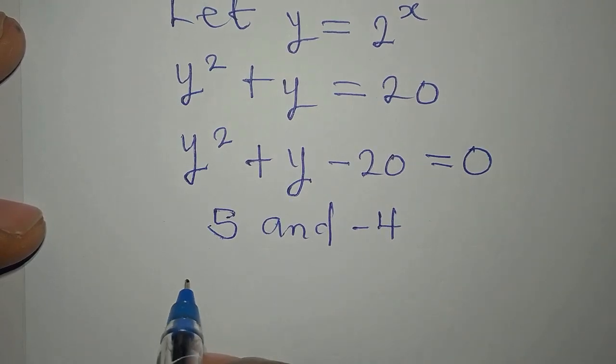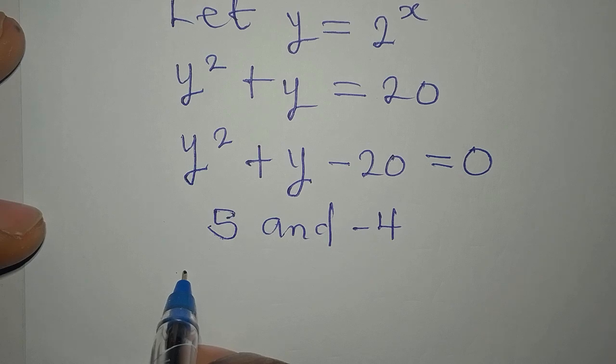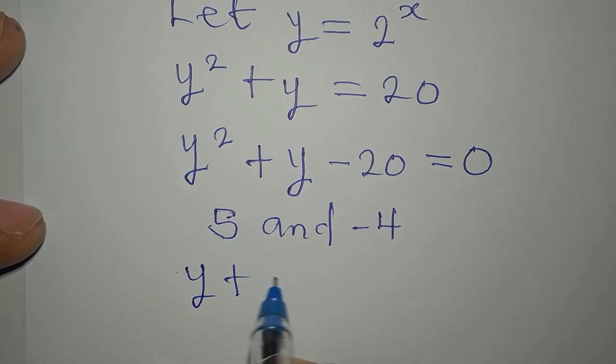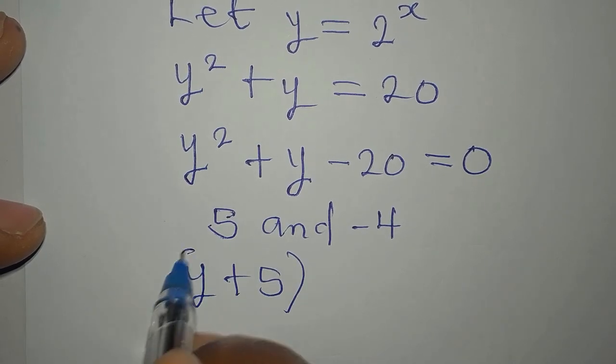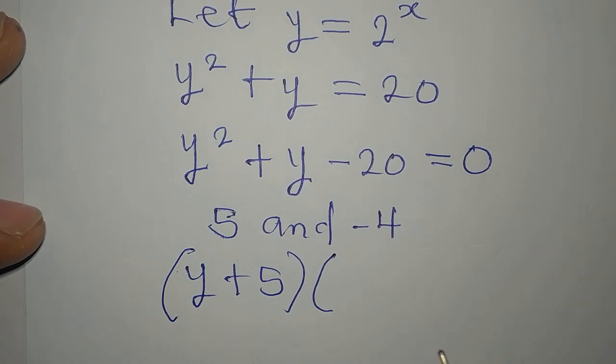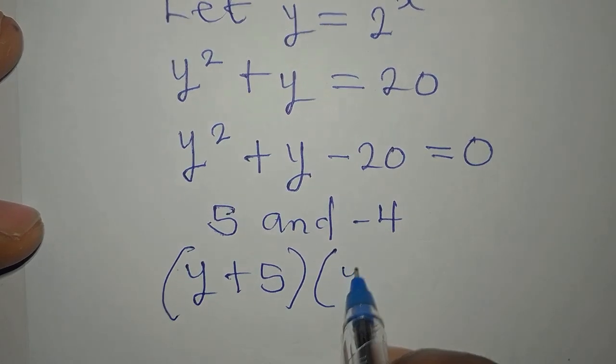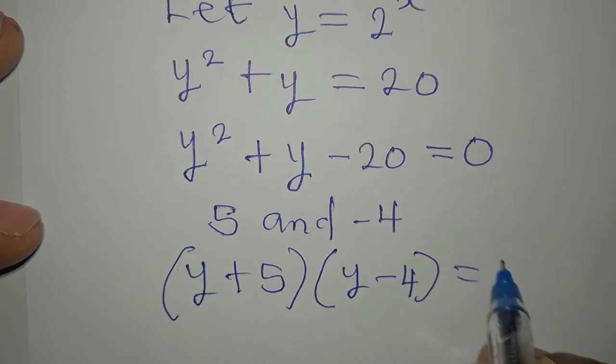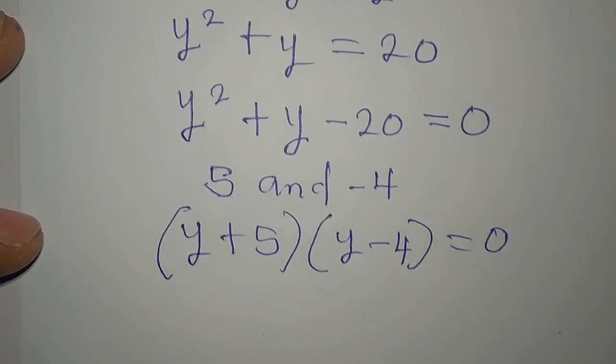So that one of the factors will now be y plus 5 is a factor. Remember, we are providing only the real solution. And then y minus 4 is the other factor. And we equate everything to 0.